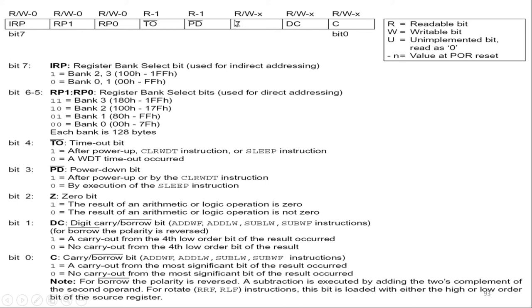The next flag is the zero flag. This flag will be set whenever the result of any arithmetic or logical operation is 0; otherwise it will be 0. The next bit is the power down bit. Whenever a sleep instruction is executed, this PD bar bit will become 0, indicating the CPU is in sleep or power down mode; generally it will be 1 otherwise. The next is the timeout bit — whenever there is a timeout or the watchdog timer overflows, this bit becomes 0; normally it is 1. Then the next two bits are RP1 and RP0, used for selecting the bank. 00 selects bank 0, 01 selects bank 1, 10 selects bank 2, and 11 selects bank 3.